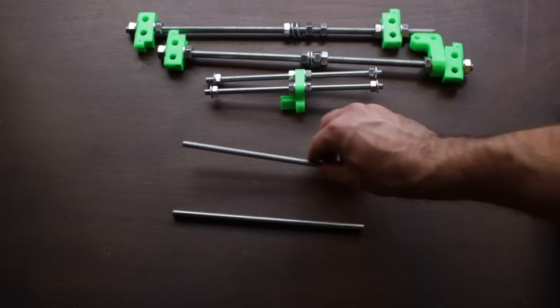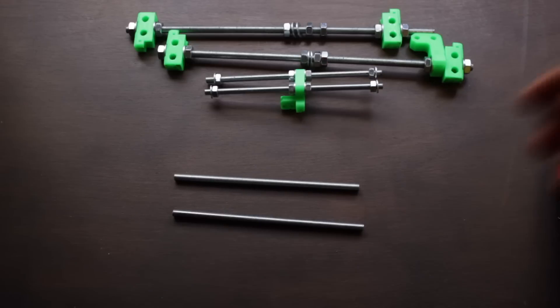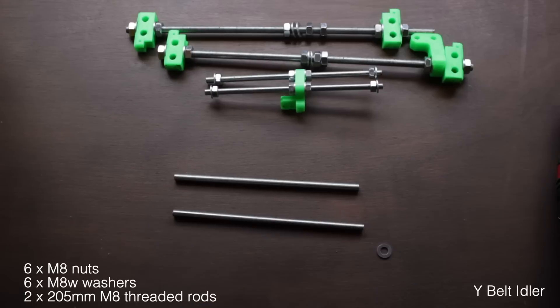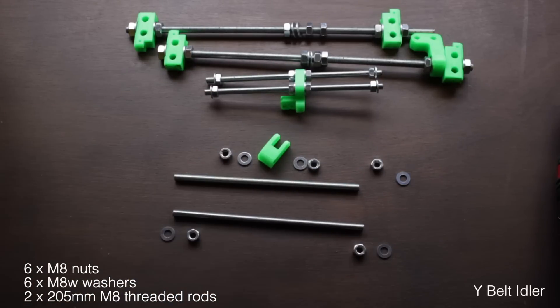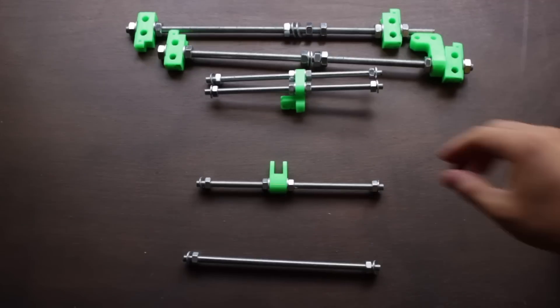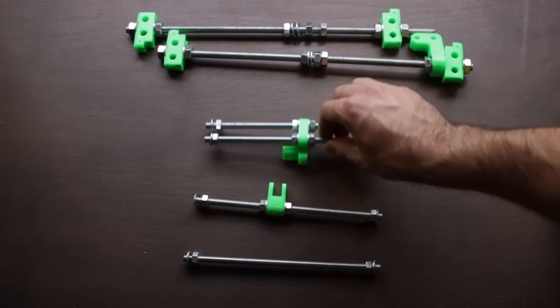we will finally do the same with the front part, for which we will need one more time, 2 M8 rods, 6 M8 nuts, 6 M8 washers and the Y belt idler that we printed. As soon as you insert each of the components in place, you will have the 6 rods ready to tighten in its final position.